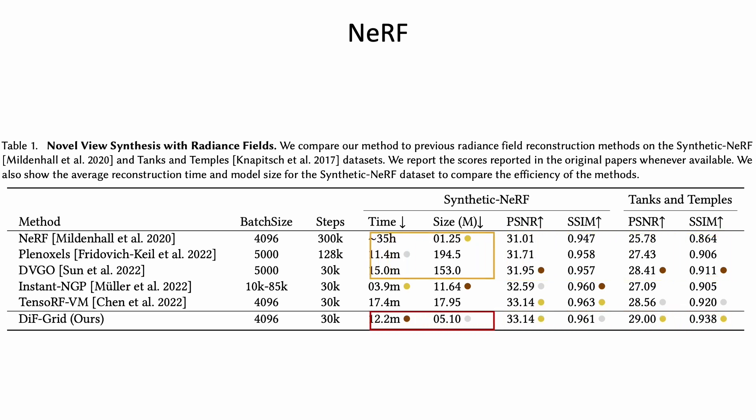And DVGO on both datasets, while being significantly more compact than Planoxels and DVGO. We also outperform Instant NGP and are on par with Tensurf regarding reconstruction quality, while being highly compact with only 5.1 megaparameters, less than one-third of Tensurf VM, and one-half of Instant NGP.